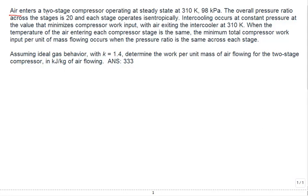We have air. It enters a two-stage compressor operating at steady state at an inlet temperature and inlet pressure. The overall pressure ratio across the stages, so there's two of them, so the total overall pressure ratio is 20, and each stage operates isentropically. Intercooling occurs at constant pressure at the value that minimizes the compressor work input. Let me go ahead and make a sketch at this point.